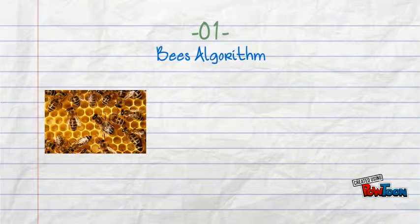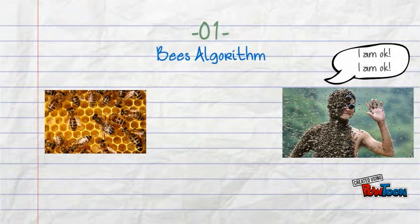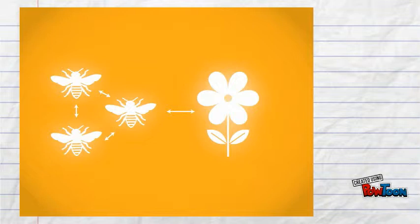It mimics the foraging strategy of honeybees to look for the best solution in a problem. So, each candidate solution is thought of as a food source, like a flower.